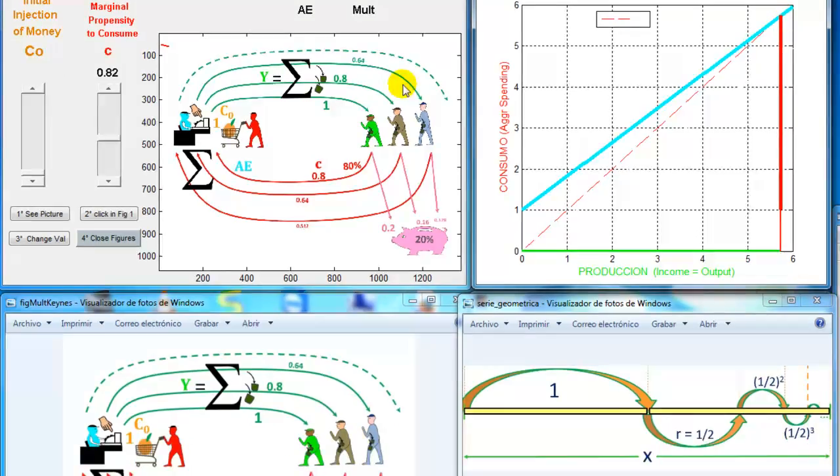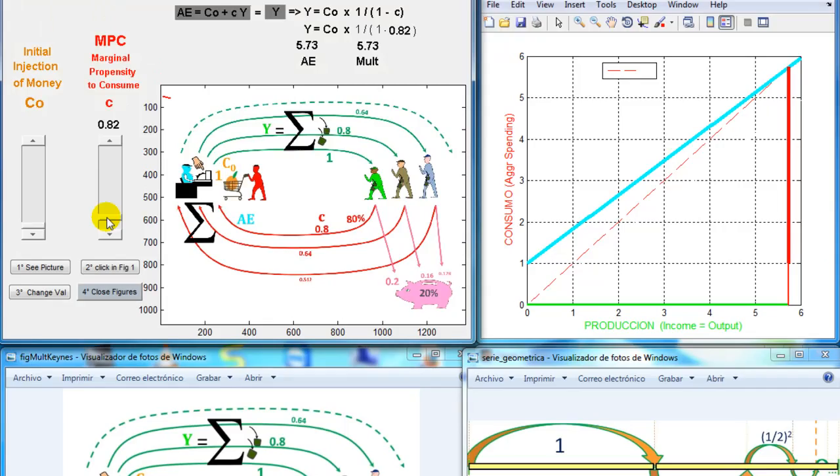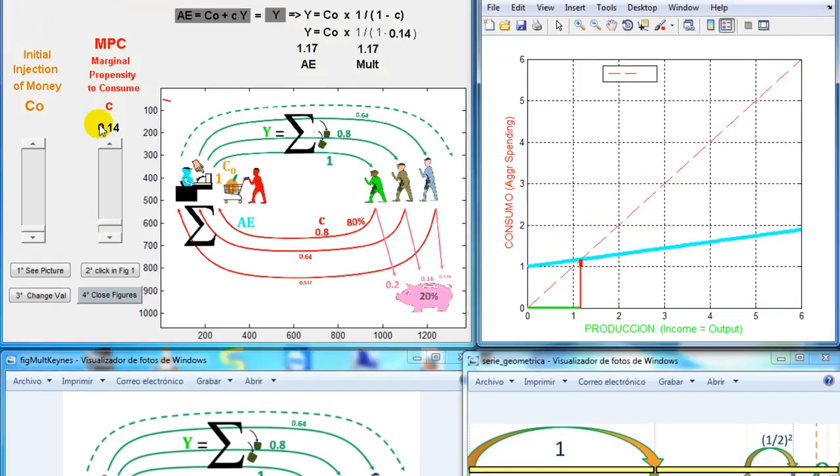Now, if C is less than 0.5, then the multiplier will be less than 2. So here we can see, for example, that with a very small value, which is much less than 0.5, we see that the multiplier is much less than 2.